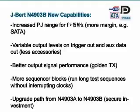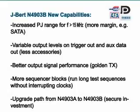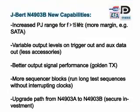For other serial bus standards, there are many other improvements in the Jaybird N4903B. The periodic jitter range is increased. You have variable output levels on the trigger and auxiliary data output. The output signal performance is further improved. And the pattern sequencer has more blocks, allowing you to set up longer pattern sequences without interrupting any clock signals. There is also an upgrade path for customers who already own an N4903A to easily transition to the B.